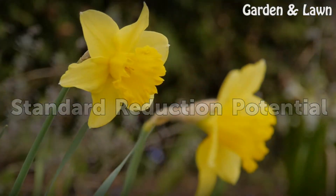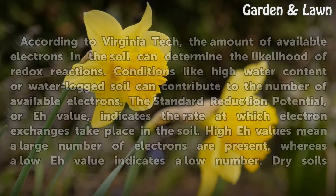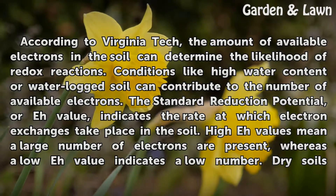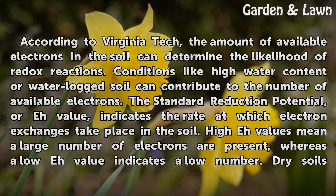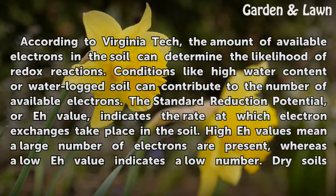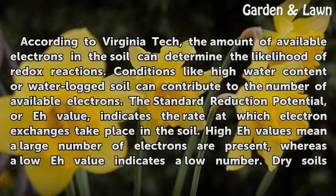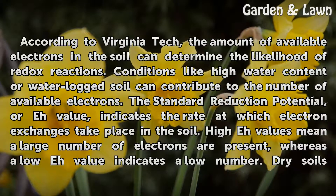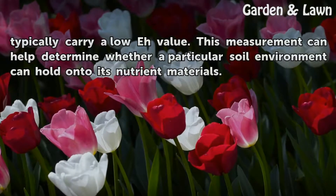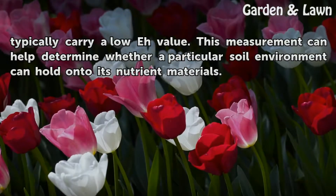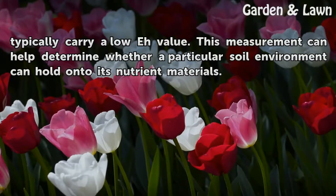Standard Reduction Potential. According to Virginia Tech, the amount of available electrons in the soil can determine the likelihood of redox reactions. Conditions like high water content or waterlogged soil can contribute to the number of available electrons. The standard reduction potential, or Eh value, indicates the rate at which electron exchanges take place in the soil. High Eh values mean a large number of electrons are present, whereas a low Eh value indicates a low number. Dry soils typically carry a low Eh value. This measurement can help determine whether a particular soil environment can hold on to its nutrient materials.